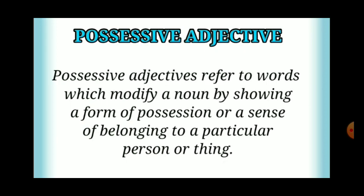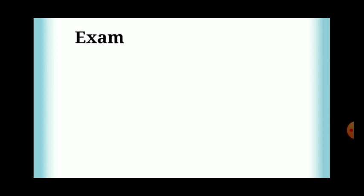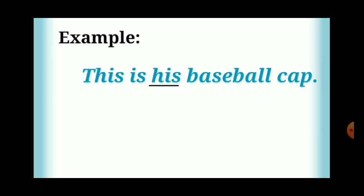Possessive adjectives refer to words which modify a noun by showing a form of possession or a sense of belonging to a particular person or thing. For example, 'This is his baseball cap.' In this sentence, 'his' is a possessive adjective because it modifies the noun 'baseball cap.' 'His' here is used to express ownership for the noun 'baseball cap.'